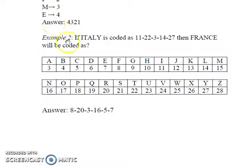In example 2, ITALY is coded as 11-22-3-14-27. How will you code FRANCE accordingly? In my last video, I talked about assigning numerical values to alphabets. Here also we have done the same thing, except for starting with 1, we have started with 3. That is, A is assigned 3, B is assigned 4, and so on, up until Z, which is assigned 28.